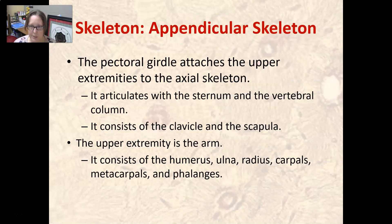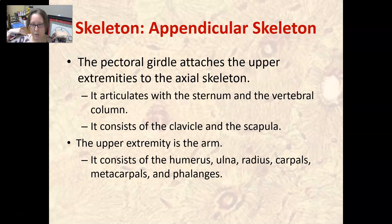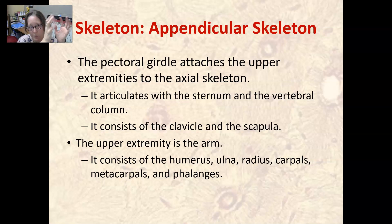The pectoral girdle attaches the upper extremities to the axial skeleton. It articulates with the sternum and the vertebral column. It consists of the clavicle and the scapula (shoulder blades). The upper extremity — the arm — is made of the humerus, the ulna and radius (forearm), the carpals (wrist bones), the metacarpals (bones of the hand), and the phalanges (fingers).